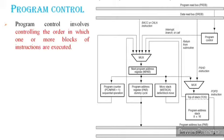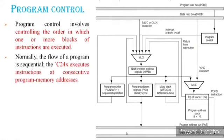Program control involves controlling the order in which one or more blocks of instructions are executed. Normally, the flow of a program is sequential. There are also non-sequential cases.